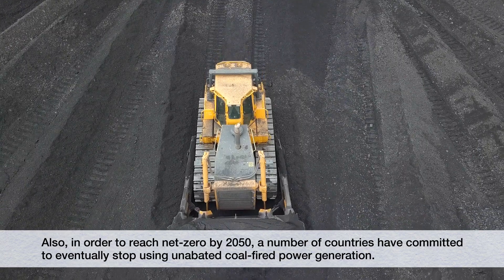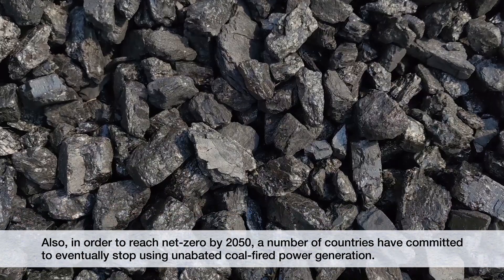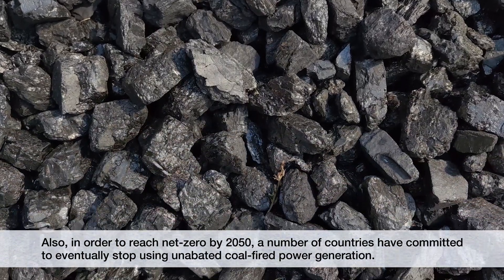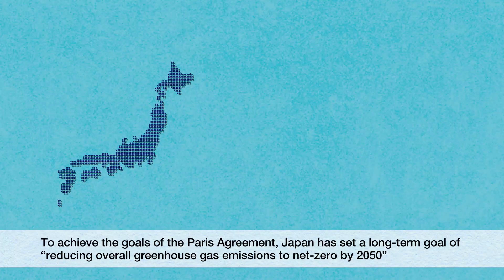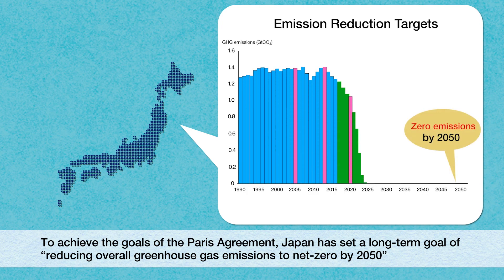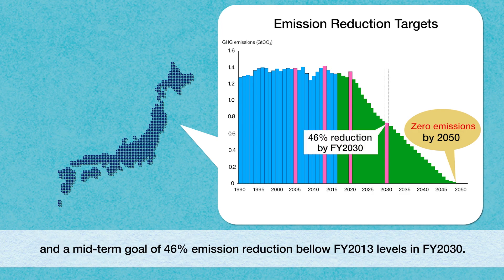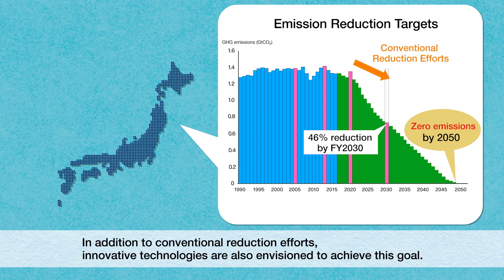In order to reach net zero by 2050, a number of countries have committed to eventually stop using unabated coal-fired power generation. To achieve the goals of the Paris Agreement, Japan has set a long-term goal of reducing overall greenhouse gas emissions to net zero by 2050, and a mid-term goal of 46% emission reduction below fiscal year 2013 levels in fiscal year 2030. In addition to conventional reduction efforts, innovative technologies are also envisioned to achieve this goal.